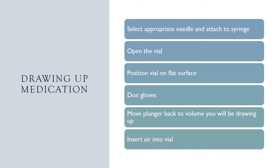Here are the steps for drawing up medication from a vial. First, select the appropriate needle and attach it to the syringe. Then open the vial — if it still has the plastic cap and has not been opened, you're not strictly required to rub with alcohol for 30 seconds, but it's good practice. If the plastic cap was already removed, such as with a multi-use vial, scrub it for 30 seconds and let it air dry. After cleaning the rubber seal, position the vial flat on your work surface. Wash your hands, put gloves on, then move the plunger back to the volume you'll be drawing and insert that air into the air space of the vial.